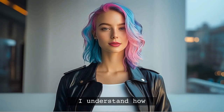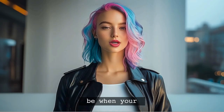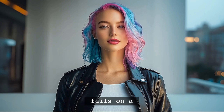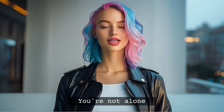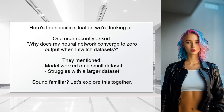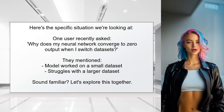I understand how disheartening it can be when your neural network performs well on a small data set but fails miserably on a larger one. You're not alone in this struggle. Many developers face similar challenges when scaling their models. Here's the specific situation we're looking at: one user recently asked, why does my neural network converge to zero output when I switch data sets? They mentioned that their model worked perfectly on a small data set but struggled with a larger one. Sound familiar? Let's explore this together.